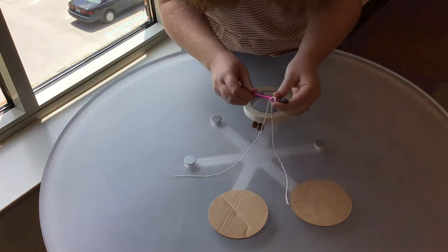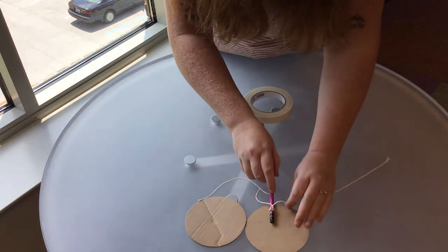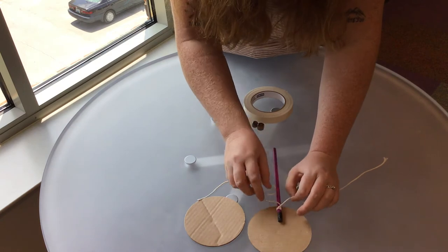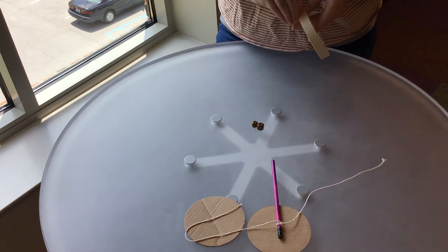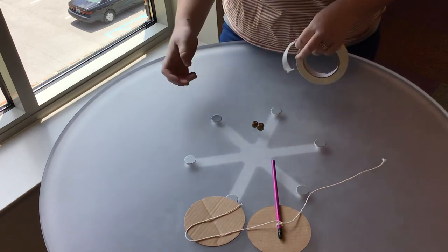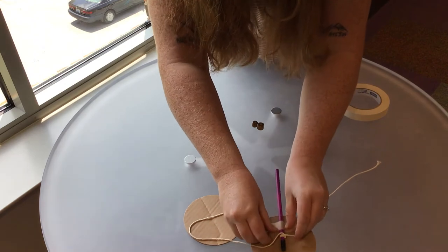Okay now that we've got our knot, we are going to tape the pencil down to one of the cardboard circles. So I'm going to take some tape and tape it down.